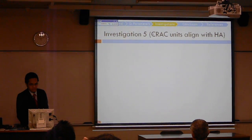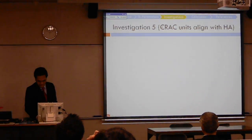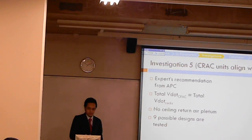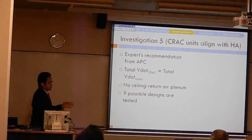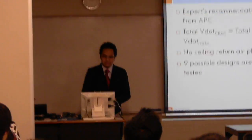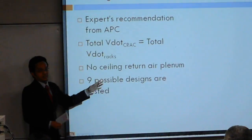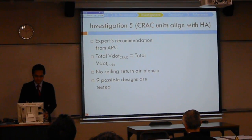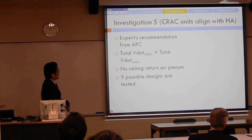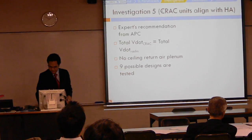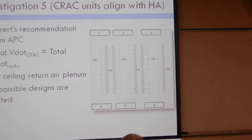This is Investigation 5, based on the reading I have made. A number of experts suggest that aligning the CRAC units with the hot aisle will effectively improve data center performance. Since this statement claims to give benefit, I reduced the total output of the CRAC units to be exactly equal to the heat dissipation — so this time there will be no extra airflow. And since the ceiling plenum is not beneficial, I removed that. Nine possible designs will be tested separately. These are the locations when CRAC units are aligned with the hot aisle.